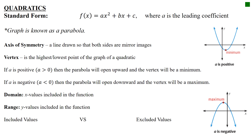The standard form for a quadratic is f(x) = ax² + bx + c, where a is known as the leading coefficient. Remember, a coefficient just means a number in front of a variable — leading because it's the first one in the equation. When you graph it, you get a U-shaped graph opening either upwards or downwards, which is known as a parabola.